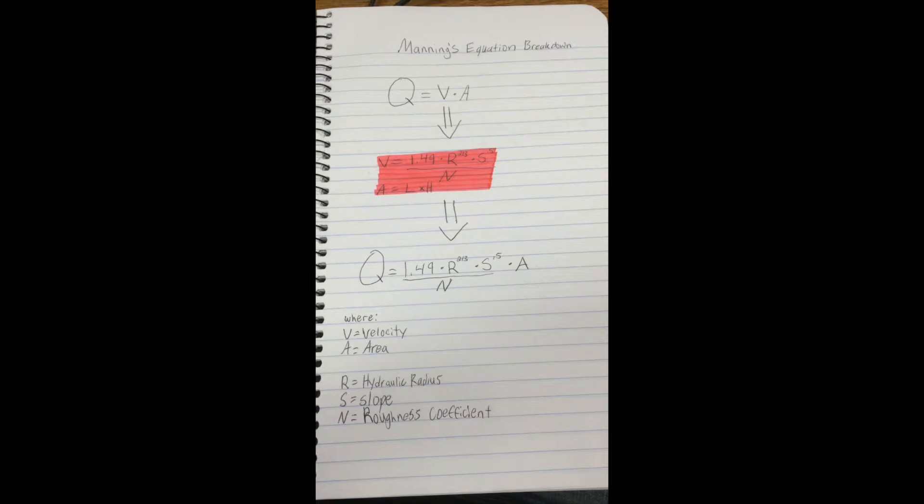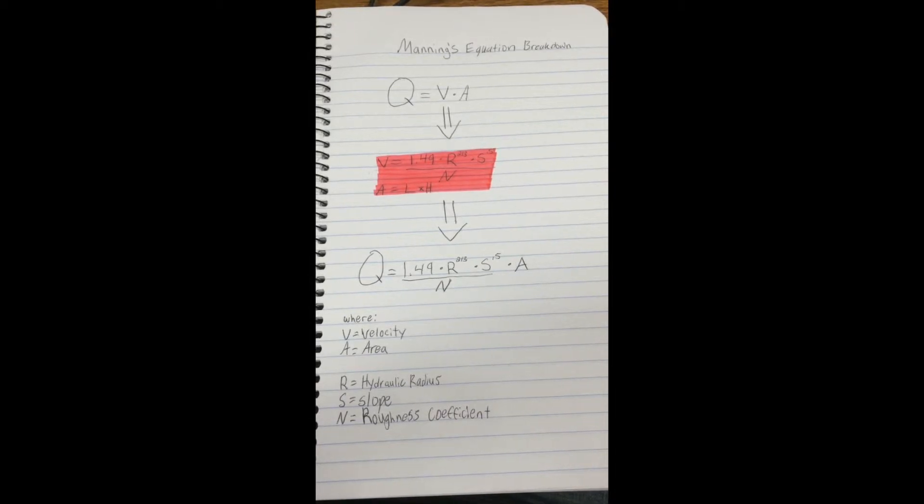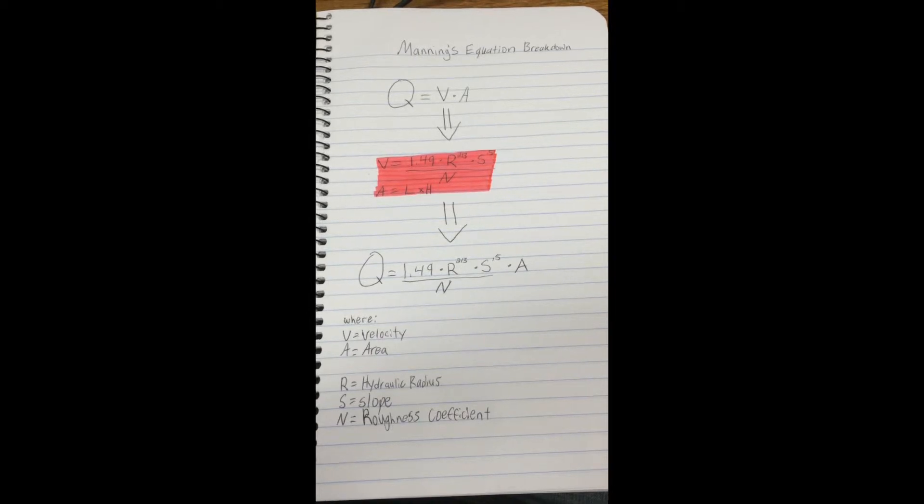All this being said, you can see how this can complicate solving Manning's equation. Now that we can see what goes into the equation, let's check out how changing variables can affect the outcome.